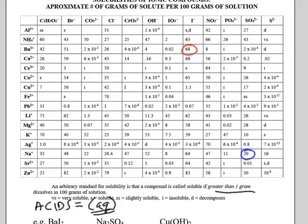Notice, if the value had been a 1, 1 is not greater than 1, so we would say it's insoluble. Some of the compounds are just listed as I for insoluble. They don't have a numerical value.